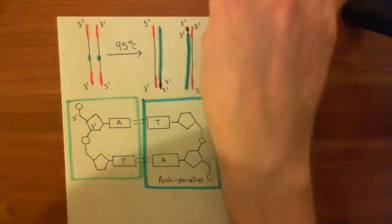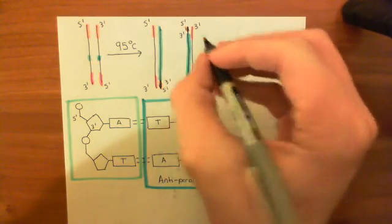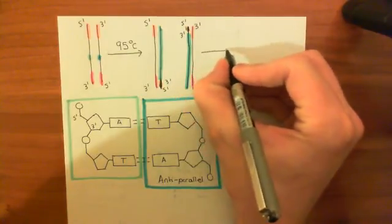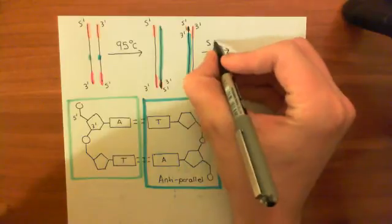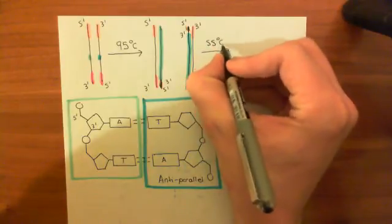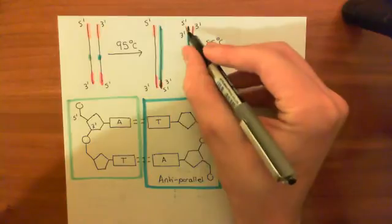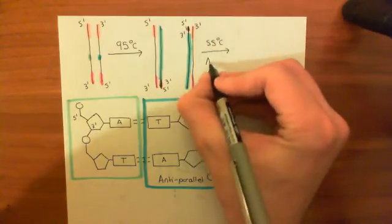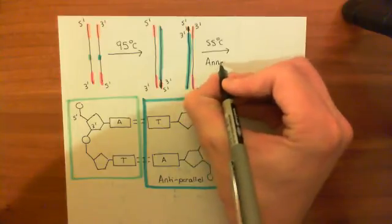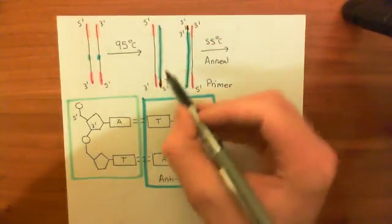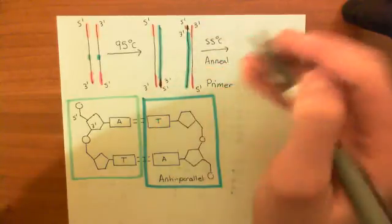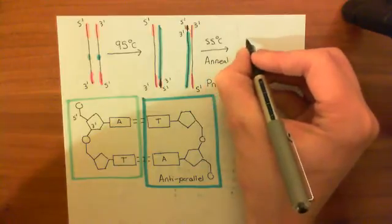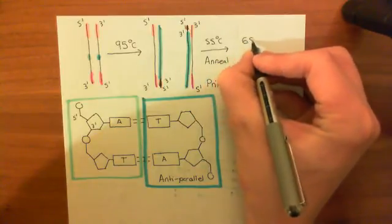So I've kind of skipped a stage here. You've split the two strands. Then what you do is you cool the medium down to 55 degrees Celsius. At that temperature, the primers — these orange bits — can now stick. The fancy name for which is anneal — they can anneal to their relative strands. So these orange bits are going to attach on to their strands.